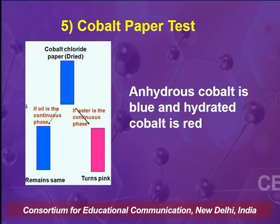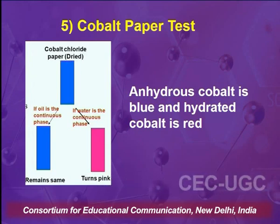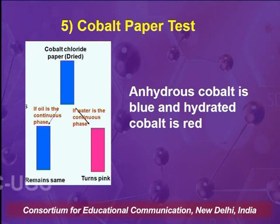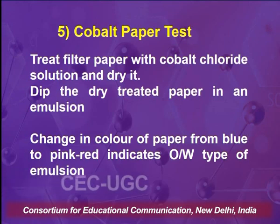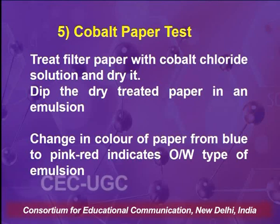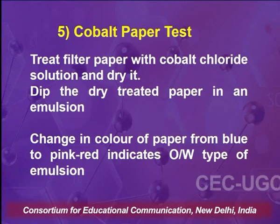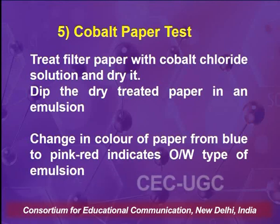This is a simple procedure and an important tool to identify whether the given emulsion is oil-in-water or water-in-oil type. Out of the five tests discussed — miscibility test, fluorescence test, electrical conductivity test, dye test, and cobalt paper test — one is able to identify the given type of emulsion system. For the cobalt paper test methodology: a filter paper is dipped in cobalt chloride solution and dried, turning blue; the dried paper is then treated with the emulsion. A change in color from blue to pink indicates oil-in-water type.